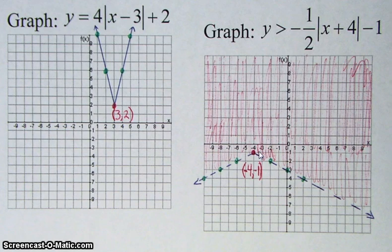So, negative 1 half. What that means is you're going to go down 1 over 2, down 1 over 2, down 1 over 2. Keep going.